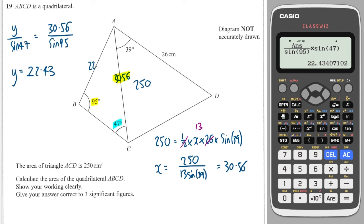So 22.43. And now I can work out the area as long as I have two sides and the angle in between them. And the angle in between them I can work out because I know two of the other angles in that triangle. So I can take them away from 180 to leave me 38 up here.